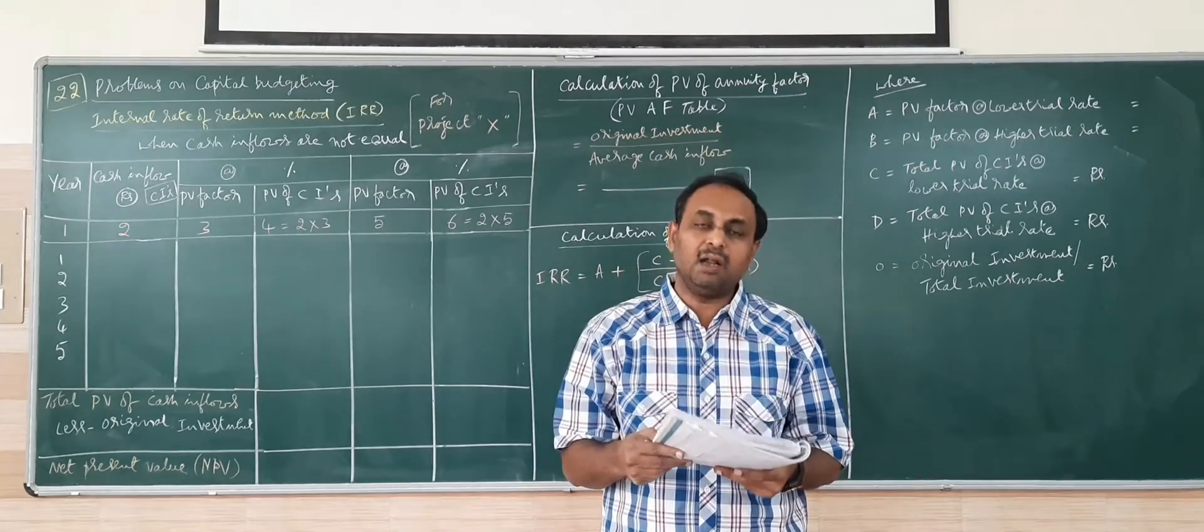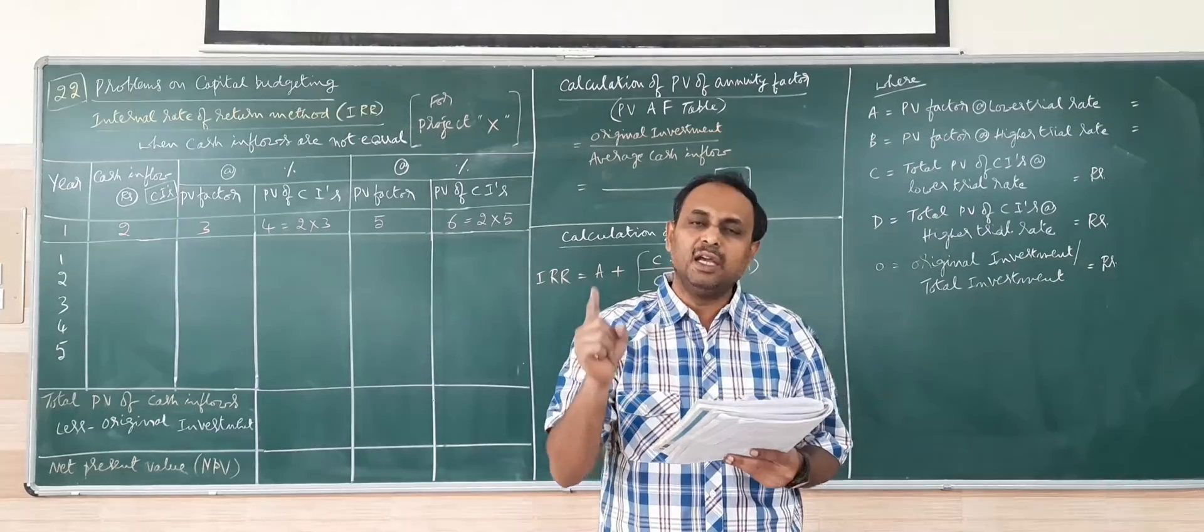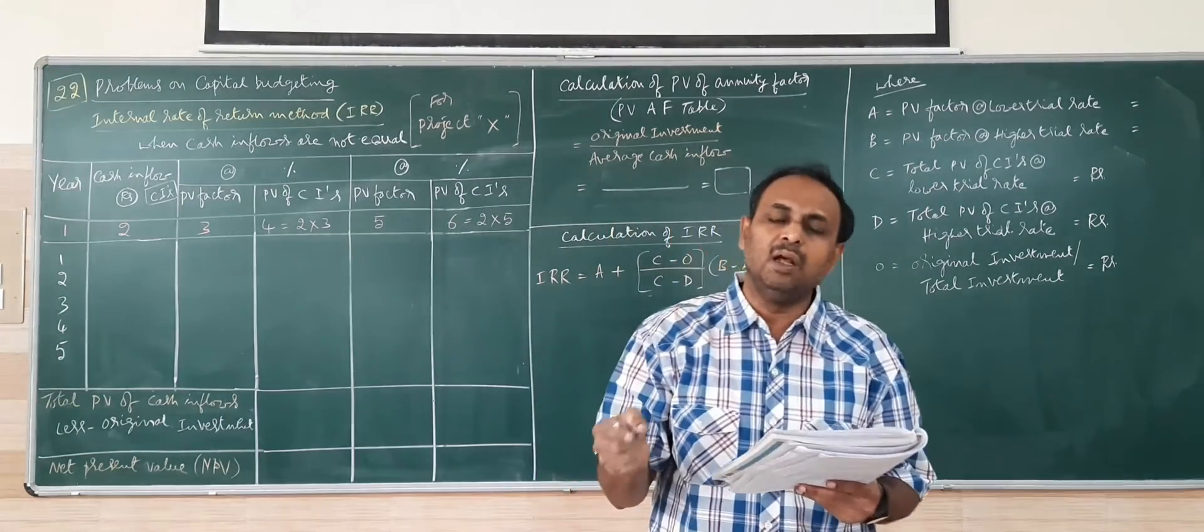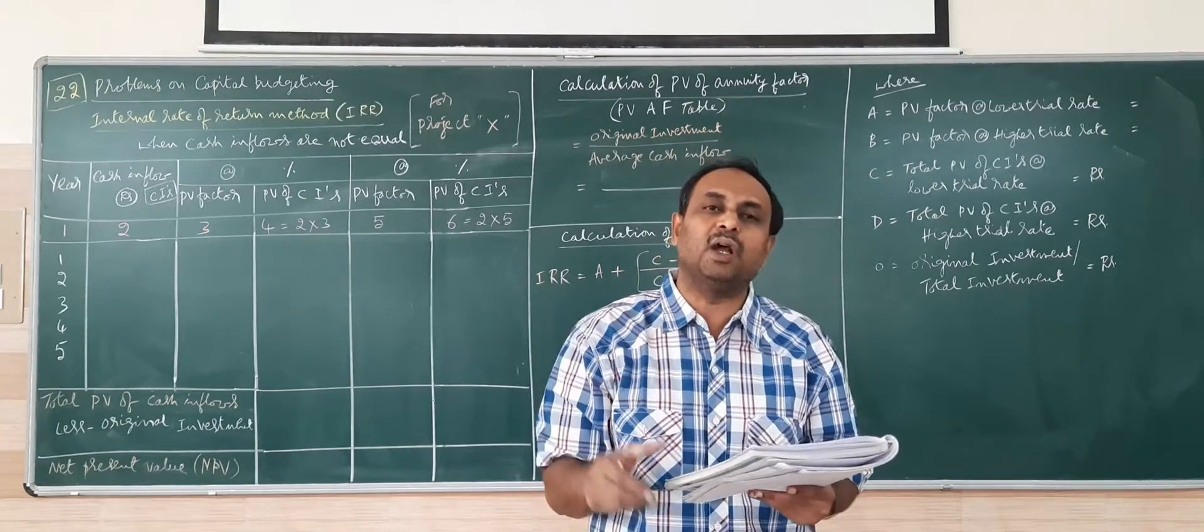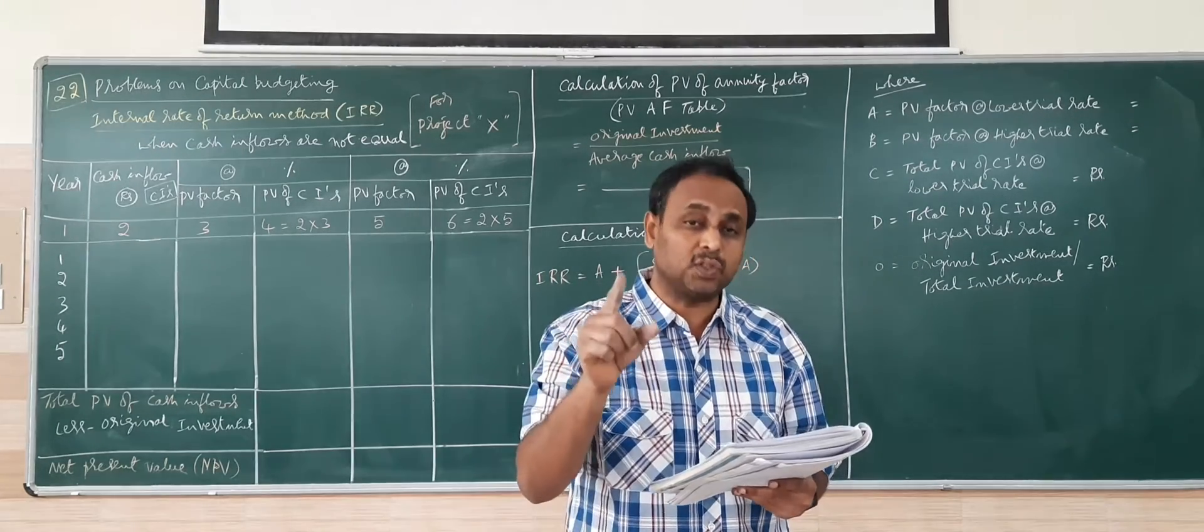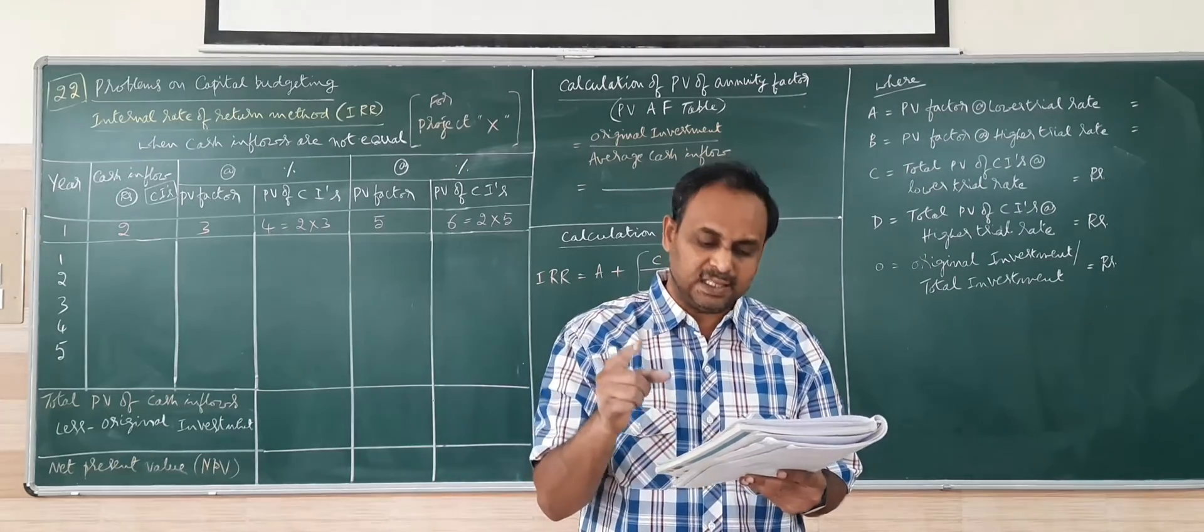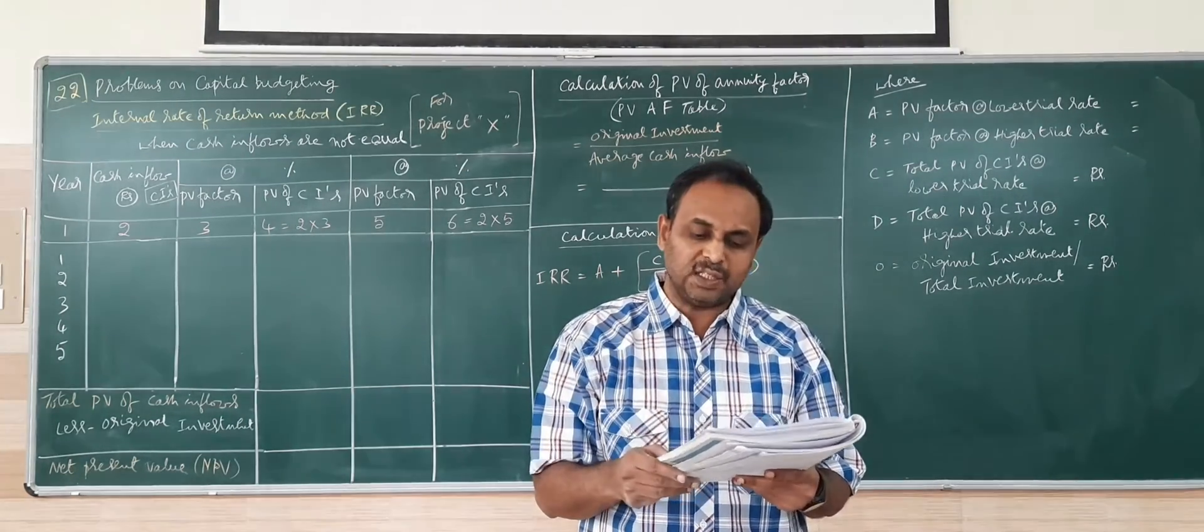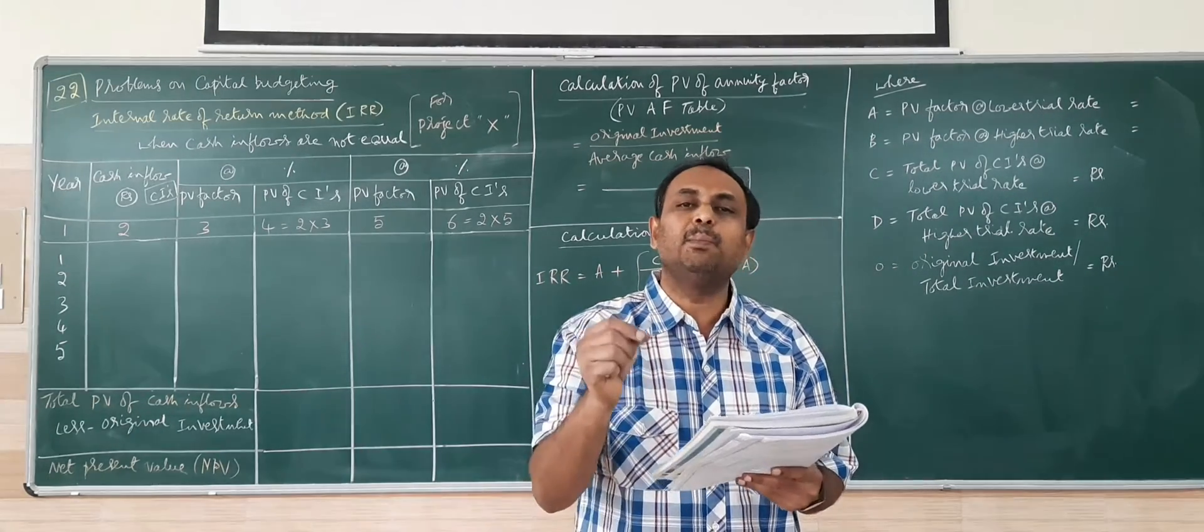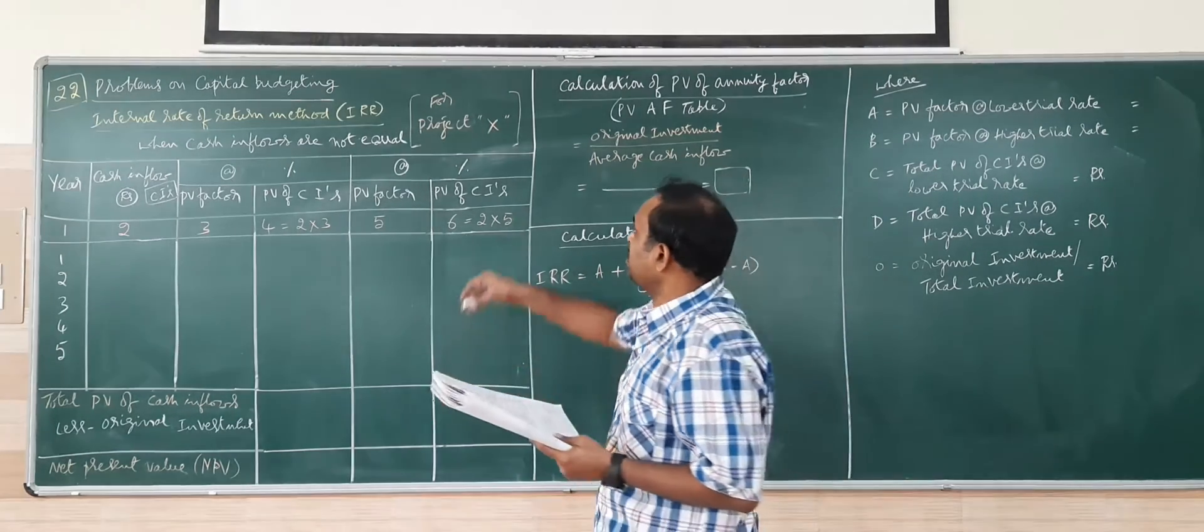The next problem under IRR. In the previous IRR we have done only one project. Here in this problem we have two projects. How to select a project when there is more than one and how to select which one is good. We have in this problem project X and project Y with different cash outflows. Which project is preferable using the IRR method?